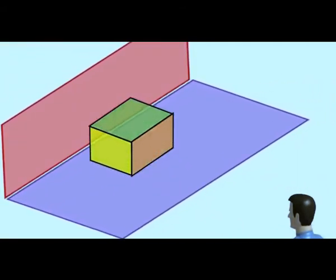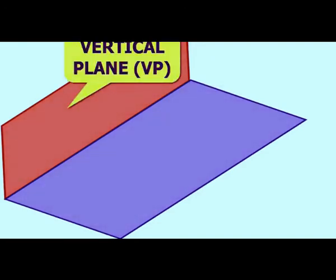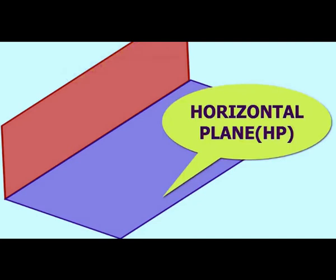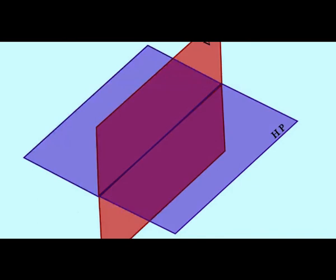The term orthographic is sometimes reserved specifically for depictions of objects where the principal axes or planes of the object are also parallel with the projection plane, but these are better known as multi-view projections. Furthermore, when the principal planes or axes of an object in an orthographic projection are not parallel with the projection plane, but are rather tilted to reveal multiple sides of the object, the projection is called an axonometric projection. Subtypes of multi-view projection include plans, elevations, and sections. Subtypes of axonometric projection include isometric, dimetric, and trimetric projections.